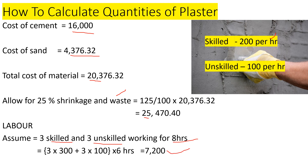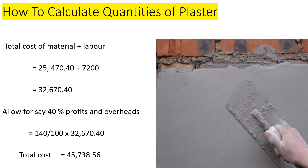The total cost is material cost plus labor: 25,470.40 plus 7,200, giving us 32,670.40 shillings. We then allow for 40% profit and overheads, bringing the final total to approximately 45,708.52 shillings. That is how we calculate the cost of a 15 millimeter thick plaster on a masonry wall.